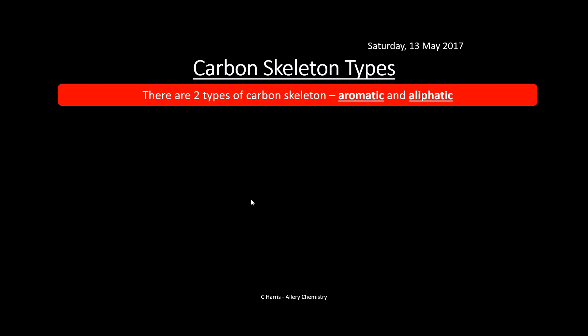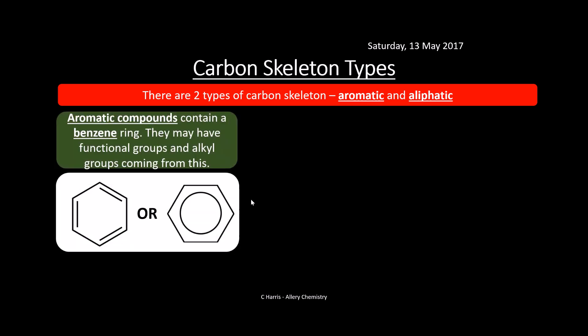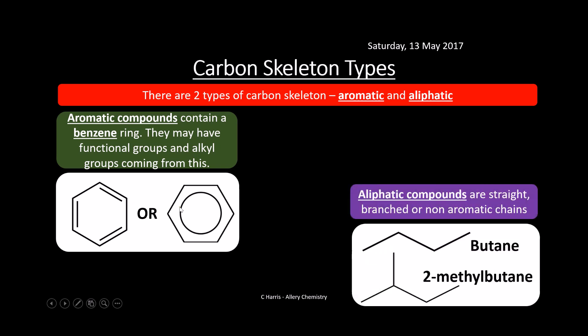We need to know about the different types of carbon skeleton — there are two types: aromatic and aliphatic. Aromatic compounds contain a benzene ring and may have functional groups and alkyl groups coming from them. Aliphatic compounds are straight or branched chains — they're not looped in a ring. Butane is an example of an aliphatic compound, and 2-methylbutane is an example of an aliphatic chain.